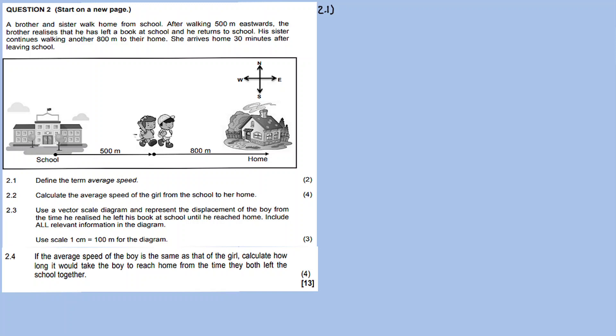If ever there's a test or an exam, there are certain things we expect you to do, like defining: average speed, resultant vector — what's the meaning of a resultant vector — instantaneous speed, displacement, speed, and velocity. These are terms you just need to know how to define. Now 2.1 says: define average speed.